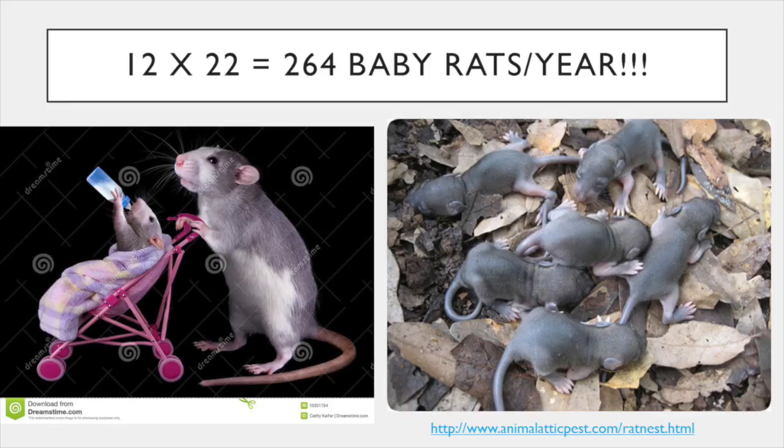I'm mostly speaking about Norway rats, which are most associated with transferring diseases to humans because they tend to live near or in human structures. Norway rats are very prolific — they are mature enough to have offspring at two to five months of age and can breed at any time of the year. Females can have 3 to 12 litters in a year and up to 22 offspring in one litter. At maximum numbers, one mother can give birth to over 200 baby rats in one year, and those offspring can also have litters of their own, so their population can explode very rapidly.